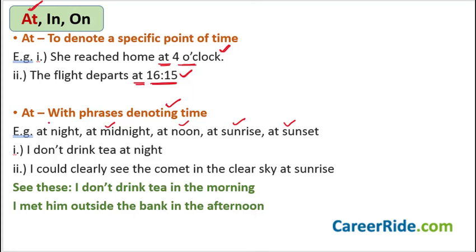With 'night' also you use 'at.' Why? Because midnight is a specific time on a given day. Noon is a specific time. Sunrise and sunset are specific times — when the first ray of sun is seen on the horizon, that is sunrise; at sunset, when the sun starts setting. So it is a specific time. That is why we use 'at' with them.